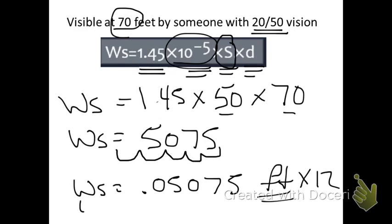So 0.05075 times 12 gives us a stroke width of 0.609 inches, just over half an inch.